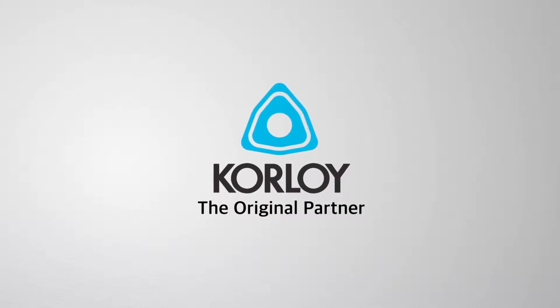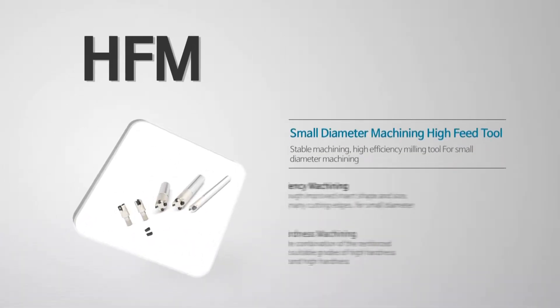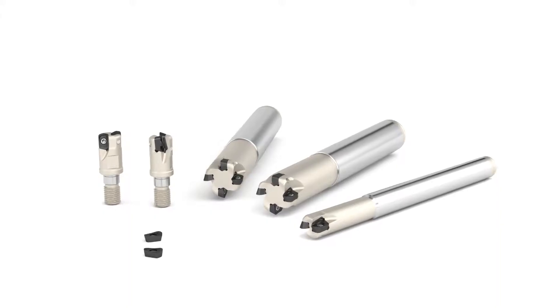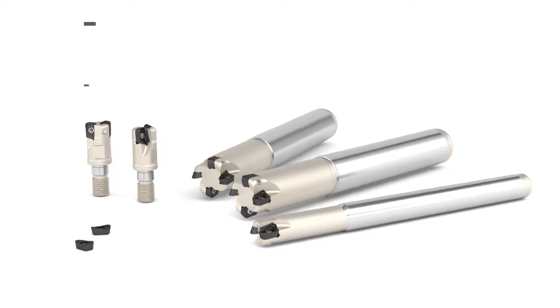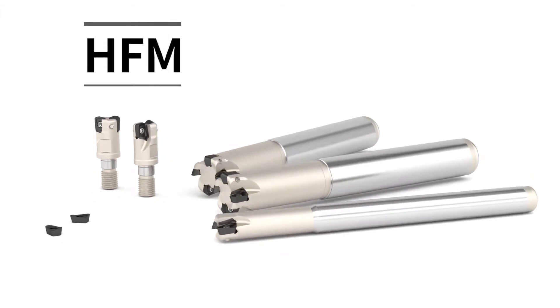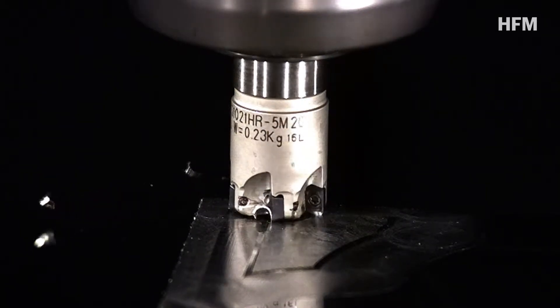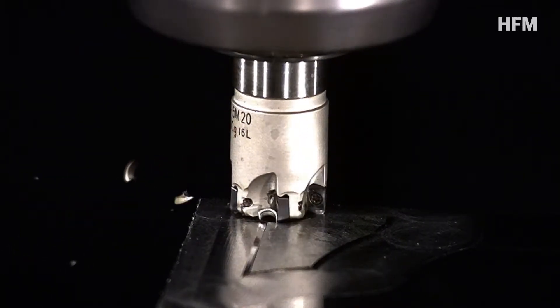The original partner CornLoy. Special experience by CornLoy - difference in productivity and efficacy. It is high feed milling tool HFM.